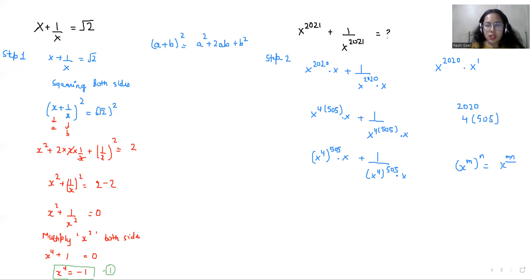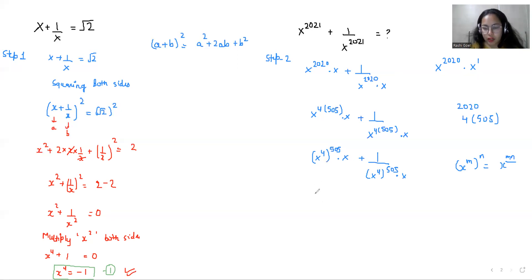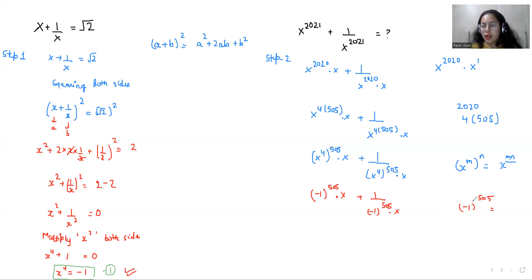From equation 5, we have x⁴ = -1. So we substitute: x^2021 = (-1)^505 · x, and 1/x^2021 = 1/((-1)^505 · x). Now, (-1)^505 — since 505 is an odd power, a negative number raised to an odd power gives a negative result — so (-1)^505 = -1.